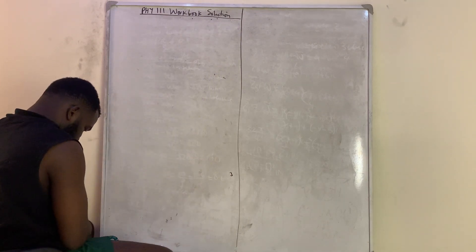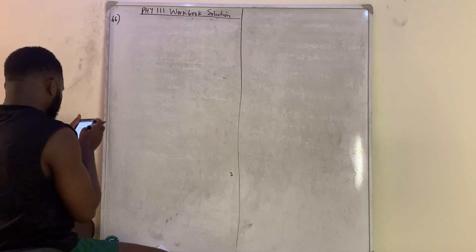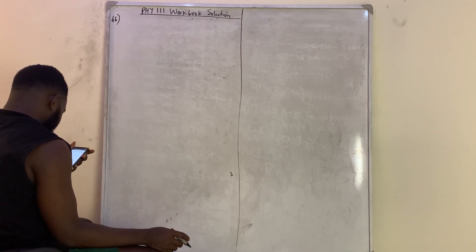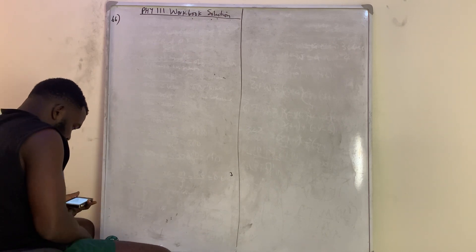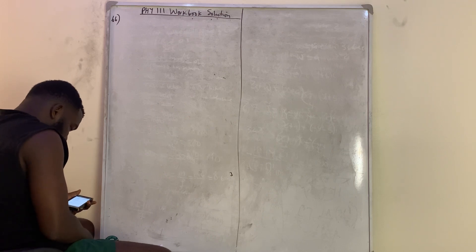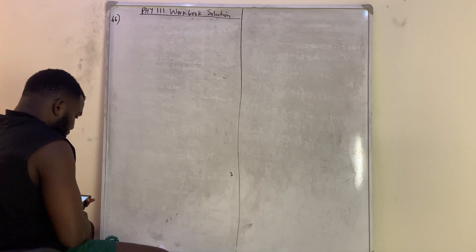Question number 66: When is a body said to be in neutral equilibrium? A body is in neutral equilibrium when it is slightly displaced and released, and the body remains at its new position without a change in the center of gravity.